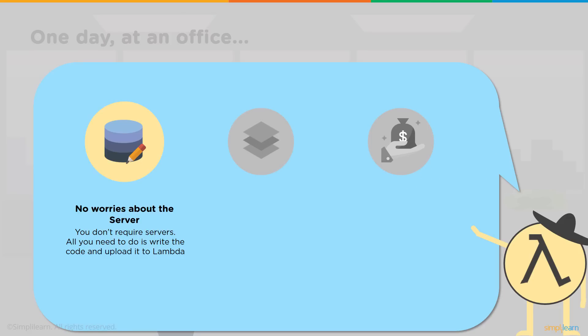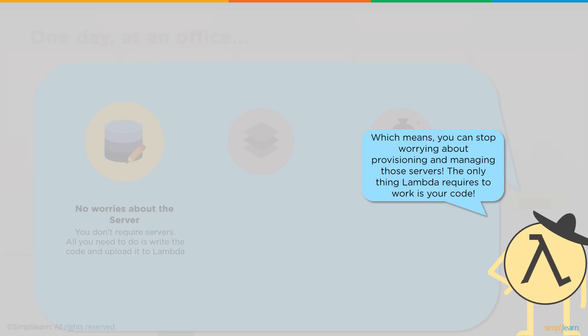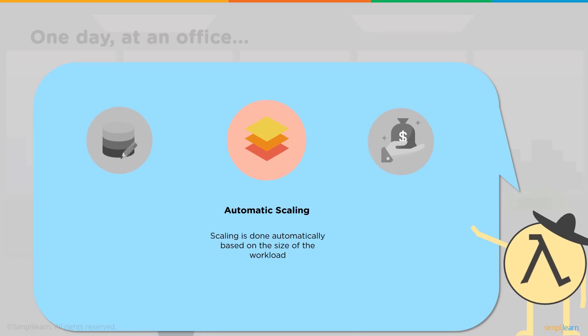Lambda automatically runs our code without requiring us to provision or manage servers. Just write the code and upload it to Lambda, and Lambda will take care of it. We don't require any server to run or manage — all you need is working code. Lambda also automatically scales our application by running code in response to each trigger.